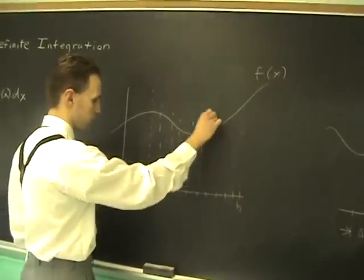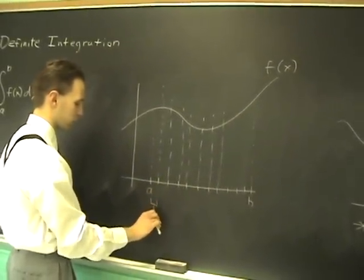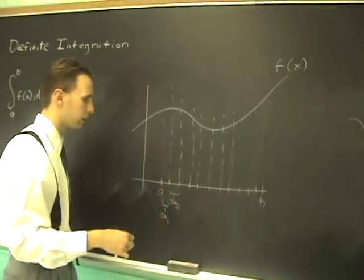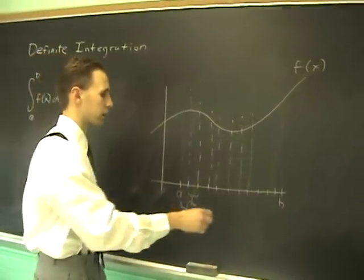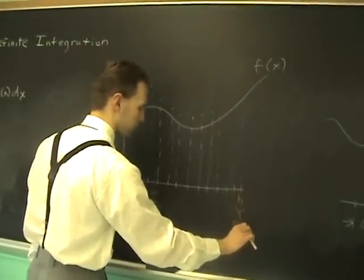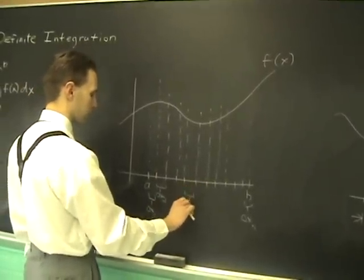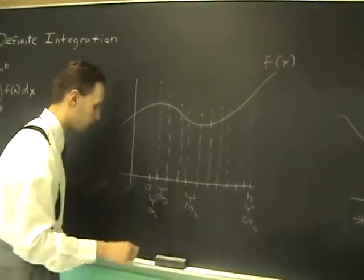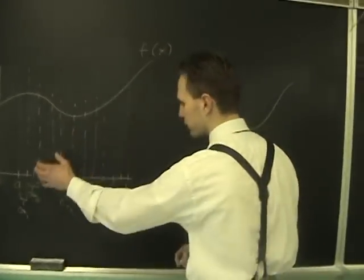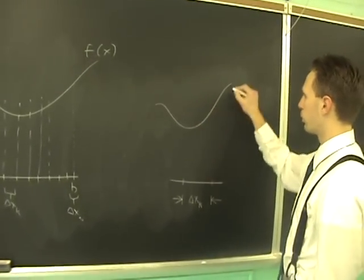We're going to label them all. This will be delta x1, and the second one will be delta x2. Let's say that we partition this thing into n different pieces, so the last one will be delta xn, unspecified number. A general one will be delta xk, and that's what we're going to concentrate on—they all go the same way.